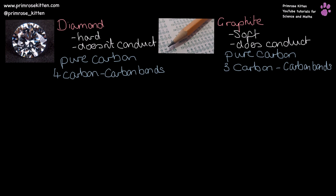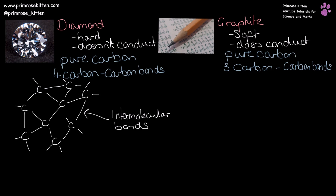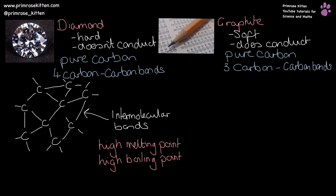Diamond makes four carbon-carbon bonds. In diamond, this means every single carbon is going to be bonded to four other carbons via very, very strong intermolecular bonds. These intermolecular bonds require a large amount of energy to break, and that gives diamond its properties — being strong, not conducting, and having very high melting and boiling points.